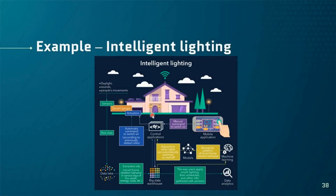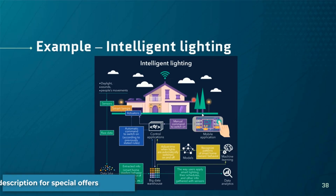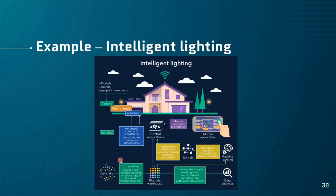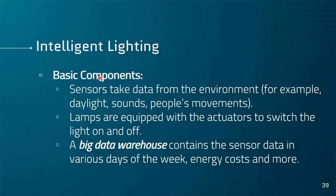Let's look at an example of all these basic elements: an intelligent lighting system. This smart lighting system may have smart lamps, actuators to control a garage door, a mobile application, a machine learning model, a big data warehouse, and data lakes. Let's identify the basic elements we've discussed.